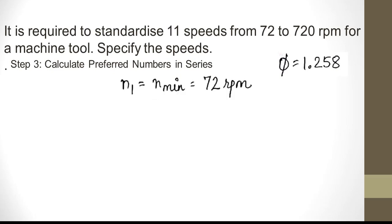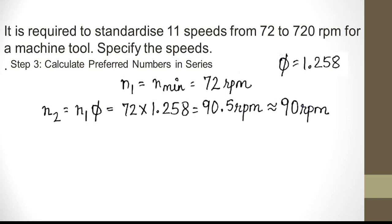Now let us calculate the preferred numbers. n1 = n_min = 72 rpm. n2 = n1 × φ = 72 × 1.258 = 90.5 rpm, rounded off to 90 rpm. n3 = n1 × φ² = 72 × 1.258².